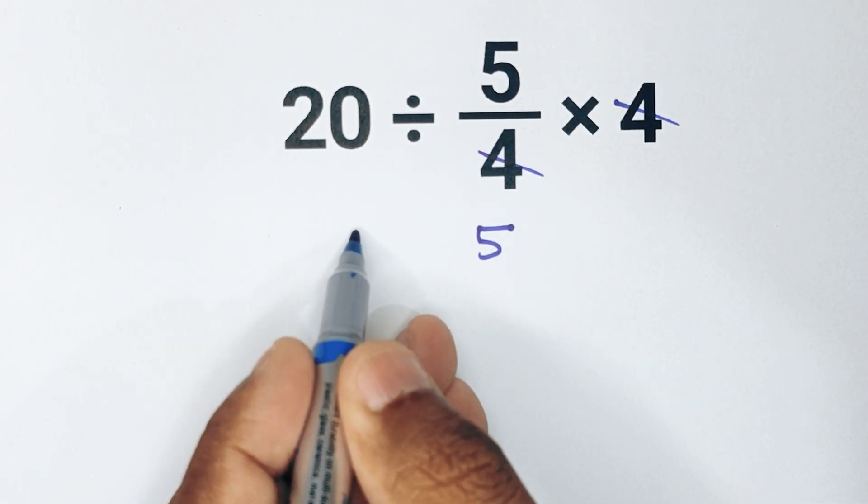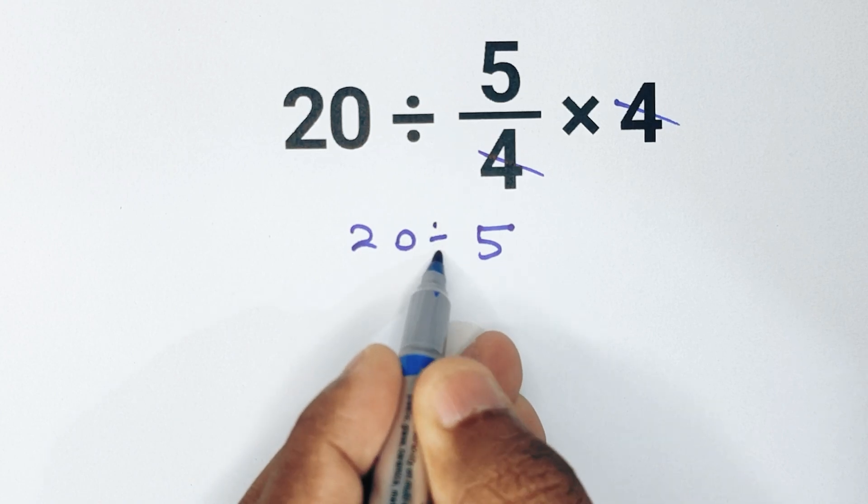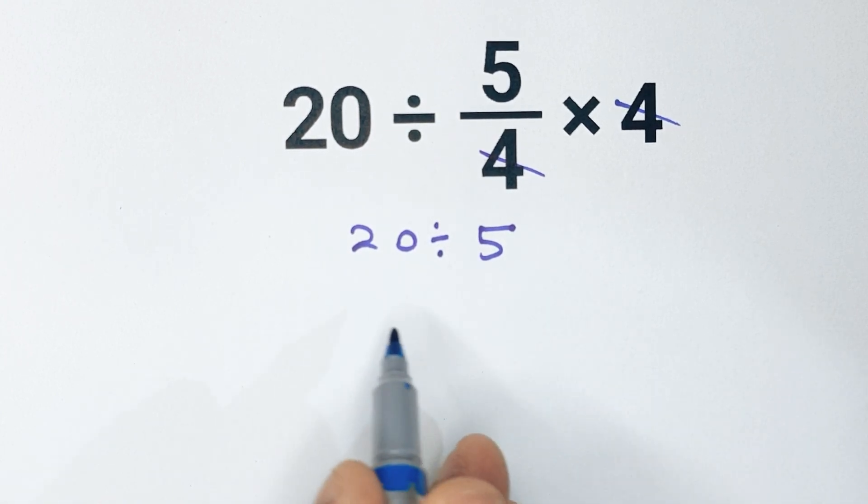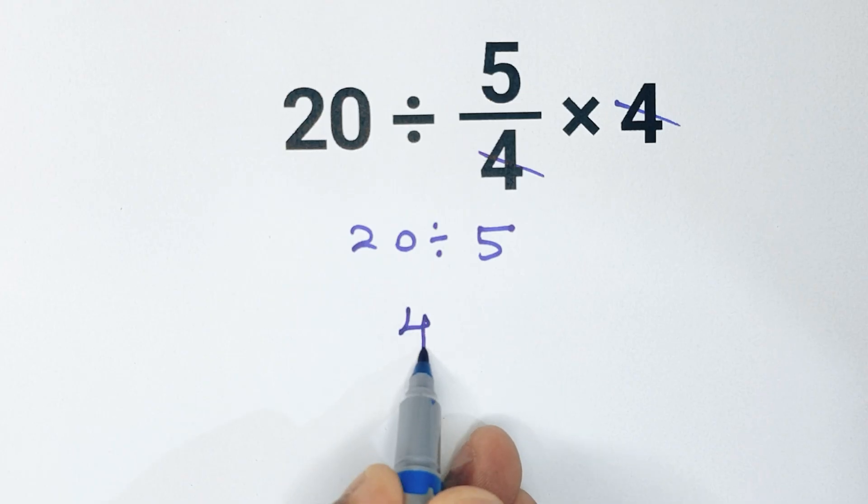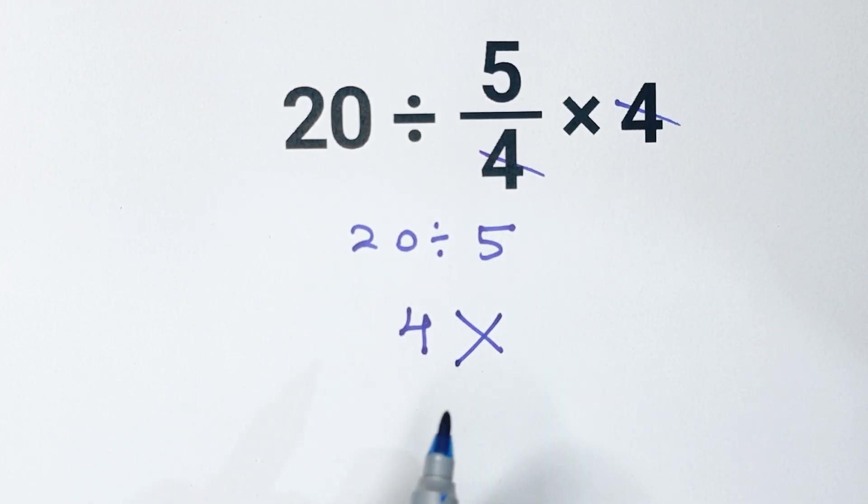Now we have 20 divided by 5, so they say 20 divided by 5 equals 4, but that's actually wrong.